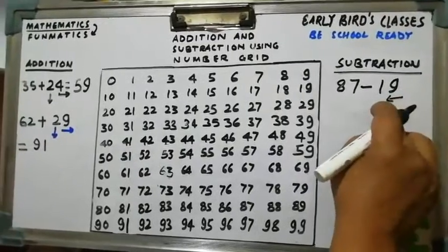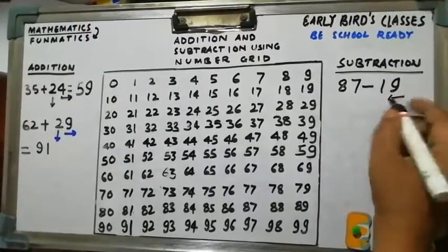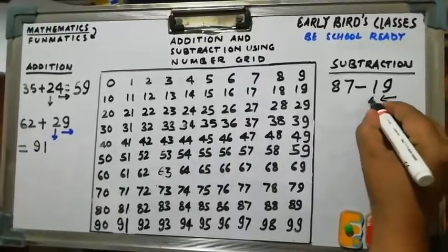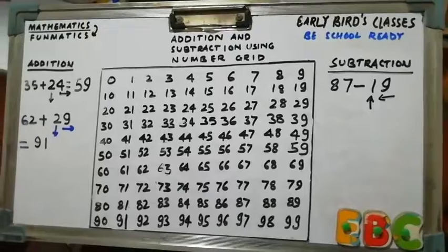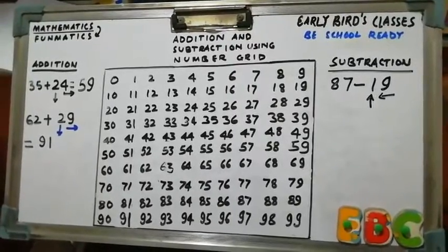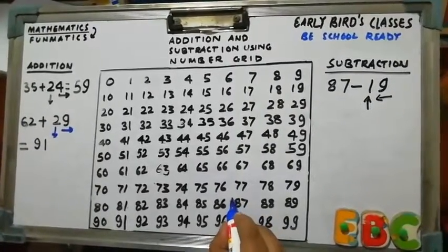But here for units place number, we have to move which direction? Reverse to addition. So horizontally left. And for tens place, we have to move vertically upward. Only difference is that. So first locate 87. So here is 87.